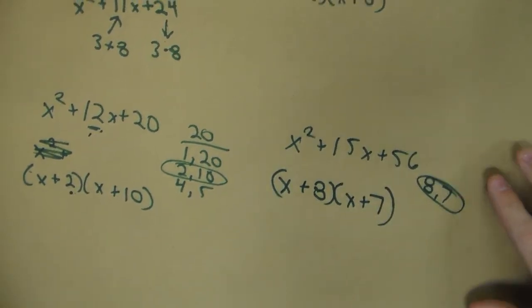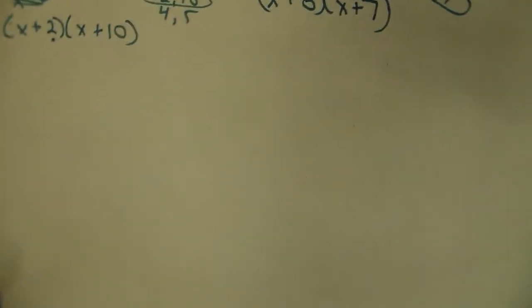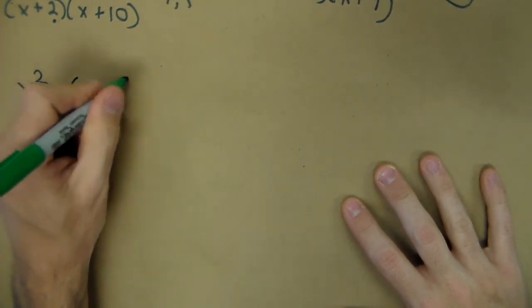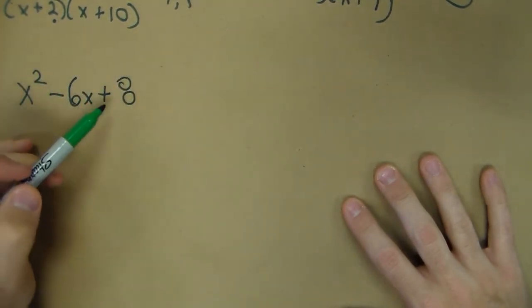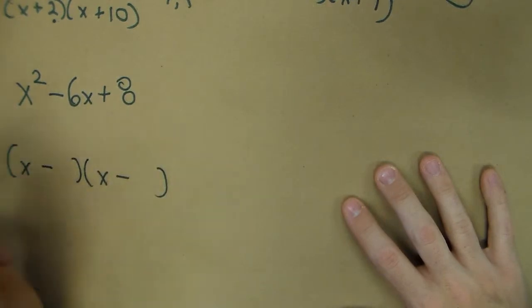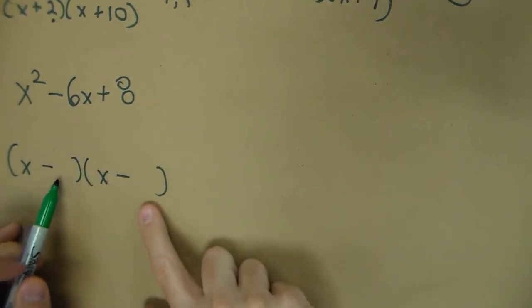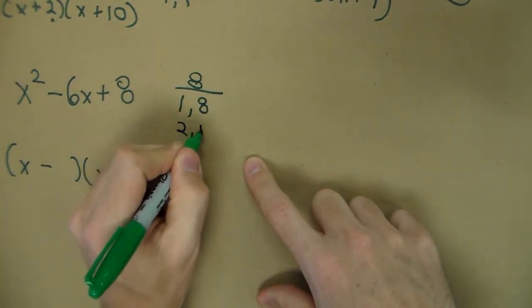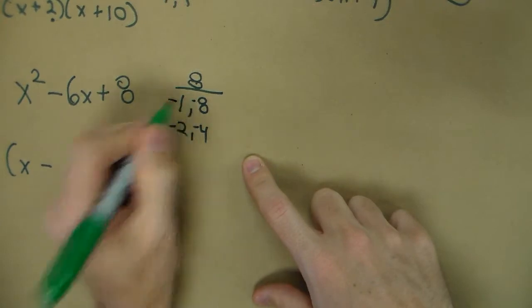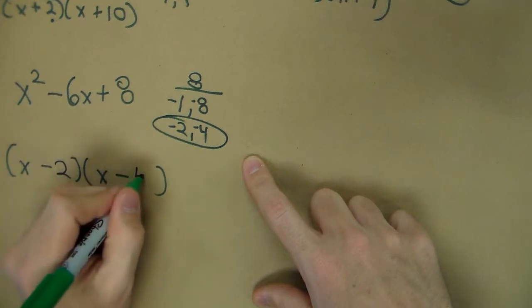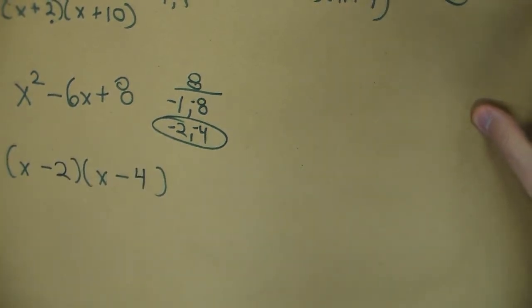Now those were pretty straightforward because they always came out to be positive. What if we had to take into account some negative values? So x² - 6x + 8. If I have a positive product and a negative sum, that means they're both negative, because the only way I can add to a negative but multiply to a positive is two negatives. So when I think of my factors of 8, like 1 and 8 and 2 and 4, they're both going to be negative in this case. Now the ones that add up to 6: negative 2, negative 4. So we say (x-2)(x-4).